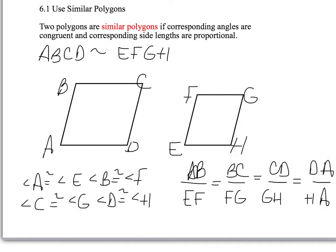We are in section 6.1, Use Similar Polygons. We're talking about similarity now, not congruency. There's a slight difference, and we're going to learn the differences. First, a definition: two polygons are similar polygons if corresponding angles are congruent and corresponding side lengths are proportional. We're going to set up some ratios or fractions to check proportionality.